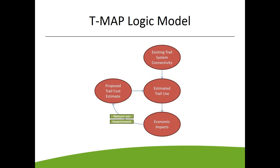We want to complete the feedback loop between estimating how much it would cost to make an improvement, understanding how many people would be served by that improvement, and relating that level of service to the value of the improvement — so that we can compare costs and benefits and understand the return on investment that is trail. So this is our basic logic model. It's pretty straightforward. And we thought: why hasn't it already been done?